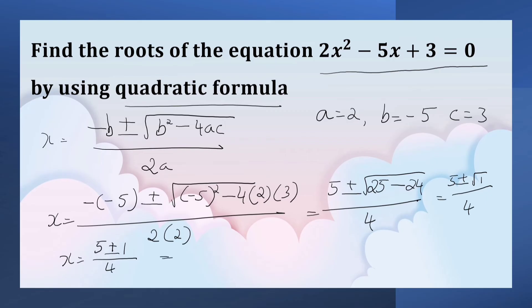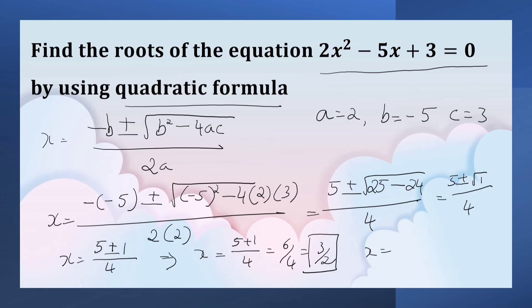x is equal to 5 plus 1 by 4, that is 6 by 4, which is 3 by 2. Or, x is equal to 5 minus 1 by 4, that is 4 by 4, which is equal to 1.